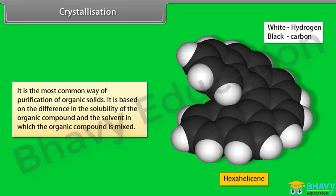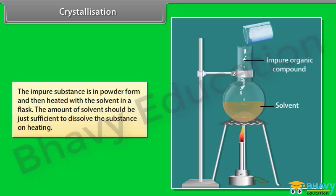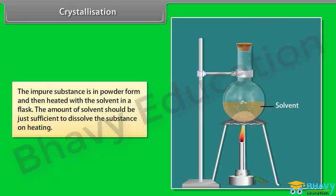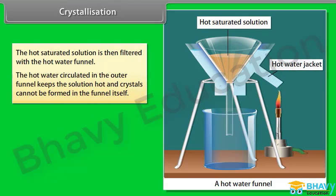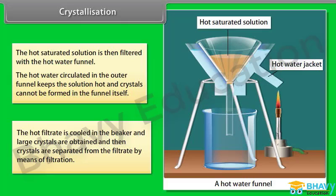Crystallization: It is the most common way of purification of organic solids. It is based on the difference in the solubility of the organic compound in a solvent. The impure substance in powder form is heated with the solvent in a flask. The amount of solvent should be just sufficient to dissolve the substance on heating. The hot saturated solution is filtered with a hot water funnel. The hot filtrate is cooled in a beaker, large crystals are obtained, and then the crystals are separated from the filtrate by filtration.